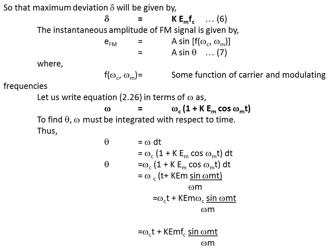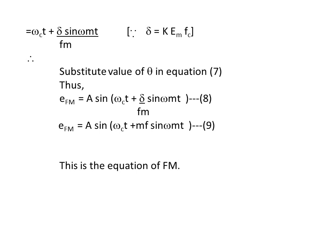Looking at the generalised formula, the maximum deviation of Δ will be found by substituting all values into the equation. We can find out the angle as well. In the end, E_FM equals A·sin(ω_C·t + M_F·sin(ω_M·t)), and this is the equation of frequency modulation. With this equation we can find out the frequency modulation of any signal.